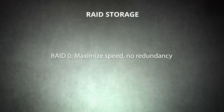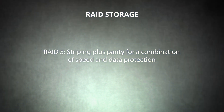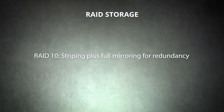RAID 0, or Striping, is used to maximize speed by spreading data evenly across multiple drives. However, it does not offer data protection through redundancy. RAID 1, or Mirroring, creates exact copies of your data on two separate drives, providing redundancy so that if one drive fails, you can still access your data on the other. RAID 5 also uses striping across multiple disks but also stores parity information to help reconstruct data in the event of a drive failure — increasing read and write speeds compared to RAID 1 while still offering some redundancy. RAID 10 combines the performance of RAID 0's striping with the redundancy of RAID 1's mirroring, and requires four drives.